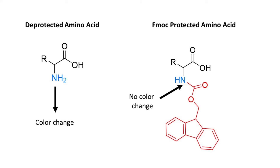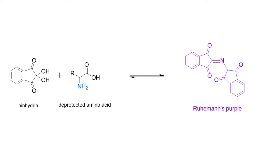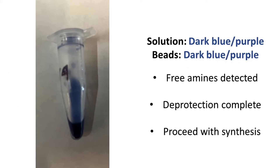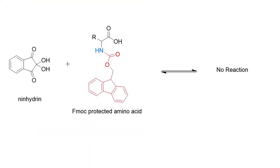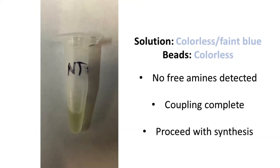Let's look at both of these outcomes. In the case of a deprotected amino acid or our deprotected rink-amide resin, ninhydrin from Reagent B will react to form a diketohydrin complex, commonly known as Ruhemann's purple. This is visibly observed by dark blue or purple beads and solution. When there are no free amines, such as after a coupling, no reaction occurs, and this is observed by clear beads and solution.